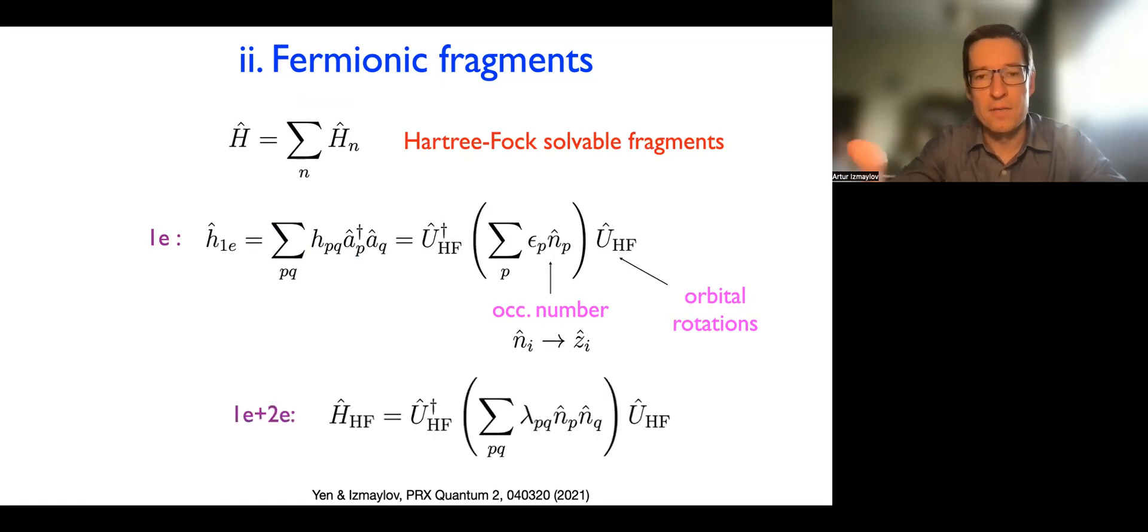And then for creating the two electron fragments like that, all you need is just to substitute linear combinations of occupations by a quadratic form for the occupation numbers. And every occupation number essentially when you go to the qubit space becomes a Z operator. So this is like a diagonal form of the operator and the orbital rotations are just hiding that, right? But in general, these fragments, they are exactly solvable by doing orbital rotations.